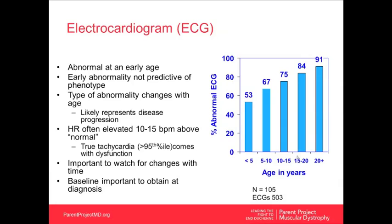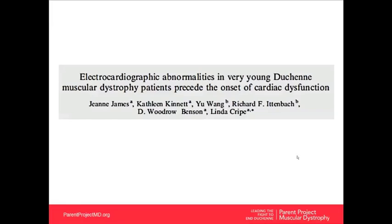In patients with Duchenne muscular dystrophy, the heart rate is often elevated about 10 to 15 beats per minute above normal. However, a truly accelerated heart rate usually only comes with cardiac dysfunction. The most important thing is to watch for changes over time and to obtain a baseline at diagnosis. Our institution at Cincinnati Children's Hospital looked at EKG abnormalities more extensively.